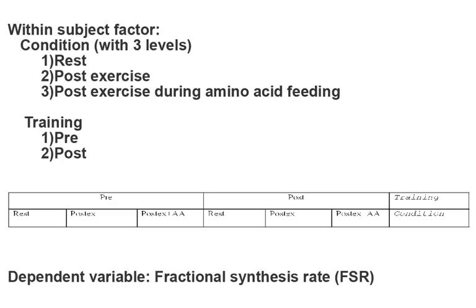We are now going to add a second within-subject factor, training, with two levels: pre and post. The purpose is to examine the FSR score measured in the same participants during the three conditions prior to (pre) and following (post) 16 weeks of resistance exercise training. In this example, the condition factor is nested within the training factor.